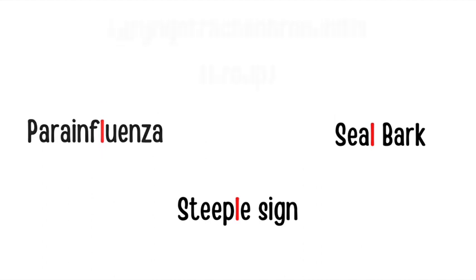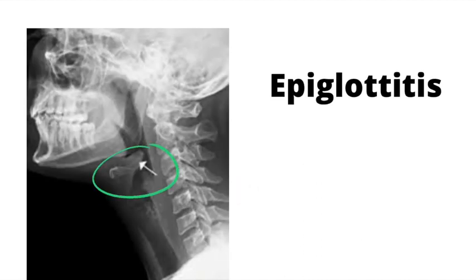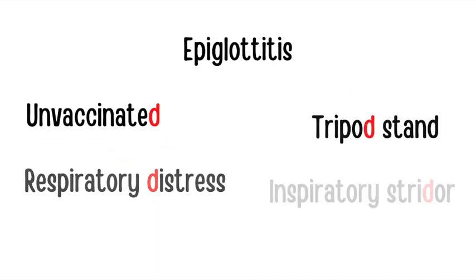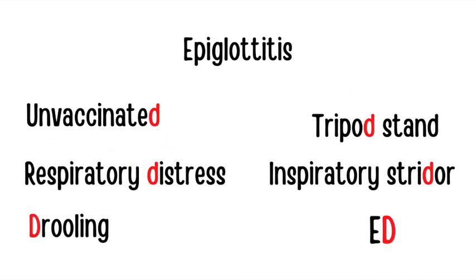Moving on to epiglottitis, also more commonly seen in the pediatric population. The green circle is highlighting the thumb sign, which is key in the radiological findings of epiglottitis. Remember the key features with the D's: unvaccinated, respiratory distress, drooling, tripod stance, inspiratory stridor, and they have to go to the ED.